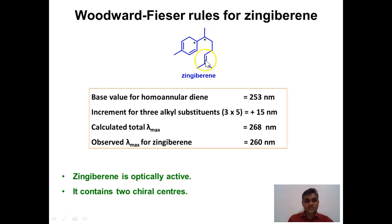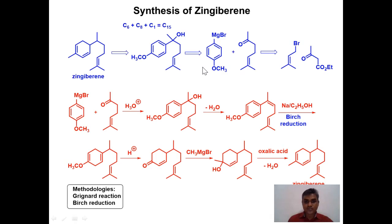Zingiberene contains two chiral centers and is therefore an optically active compound. The naturally occurring zingiberene in ginger is in the levo form. Now let us discuss the synthesis of zingiberene, which provides additional evidence for its structure.